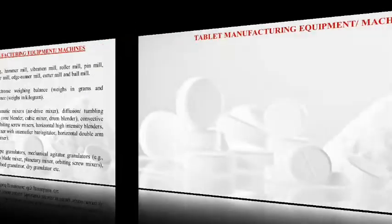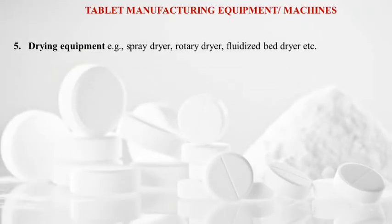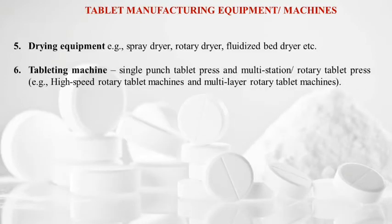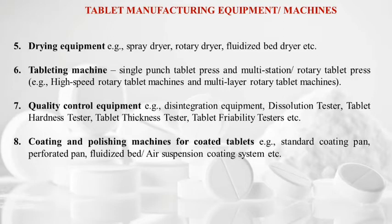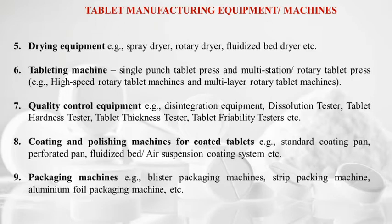Drying equipment includes spray dryer, rotary dryer, and fluidized bed dryer. Tableting machines: single punch tablet press and multi-station rotary tablet press. Quality control equipment: disintegration equipment, dissolution tester, tablet hardness tester, thickness tester, and friability tester. Coating machines: standard coating pan, perforated pan, fluidized bed air suspension coating system. Packaging machines: blister packaging, strip packaging, and aluminum foil packaging machines.